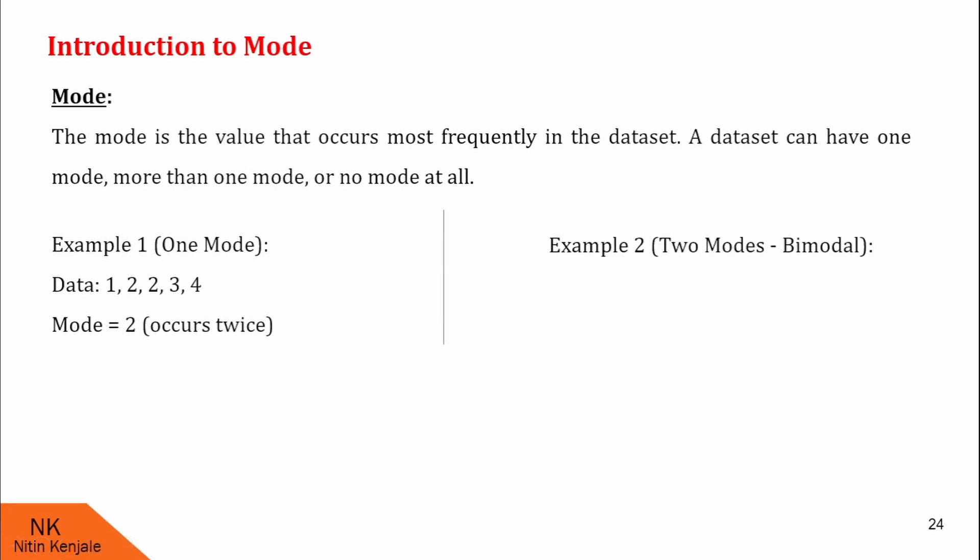Let us see another example. Here we will see this data will have two modes. Such data is also called bimodal. Look at this data. It consists of values 1, 2, 2, 3, 3 and 4. Since values 2 and 3 occur twice, their frequencies are equal. Therefore here mode is 2 and 3.